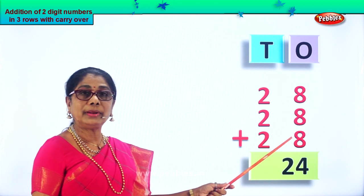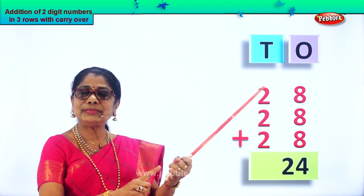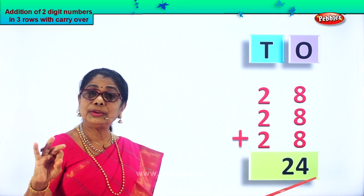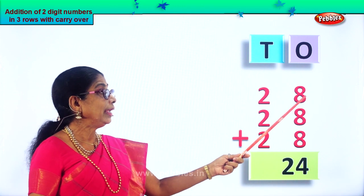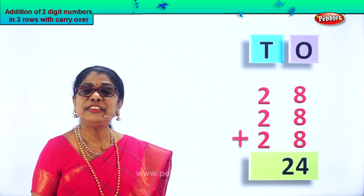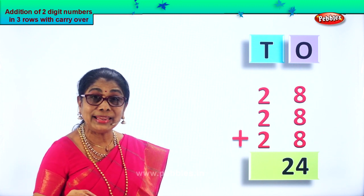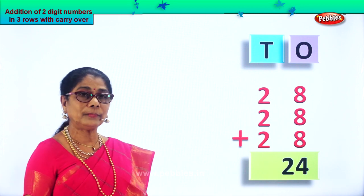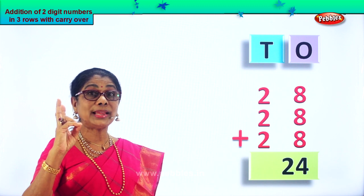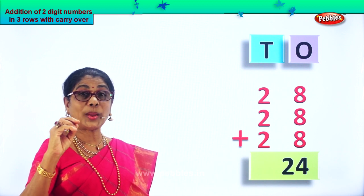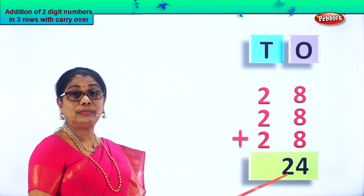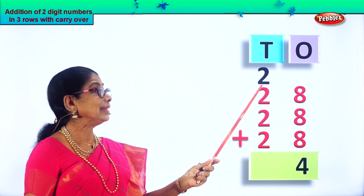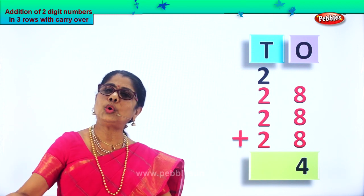Sixteen plus another eight: seventeen, eighteen, nineteen, twenty, twenty-one, twenty-two, twenty-three, twenty-four. Eight plus eight plus eight is twenty-four ones — that is twenty plus four. We leave the four ones. Twenty ones equals two tens, so we carry the two to the tens place.